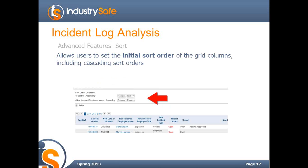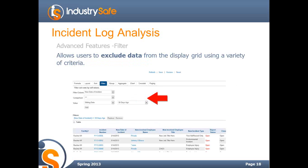The sort feature allows you to do sorts. You can always sort by clicking on the name of a column. But if you want to do a cascading sort — for example, first sort by facility and then by employee name — you can do that with the sort feature. You can also create your own filters. There are multiple ways to filter the data: you can filter for the past 30 days, the last quarter, a certain facility, or a certain incident type.